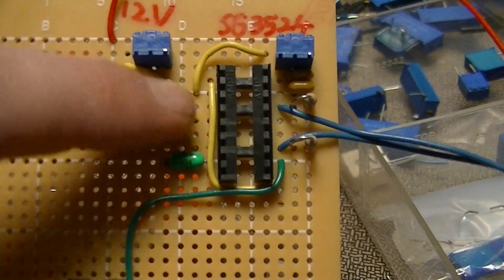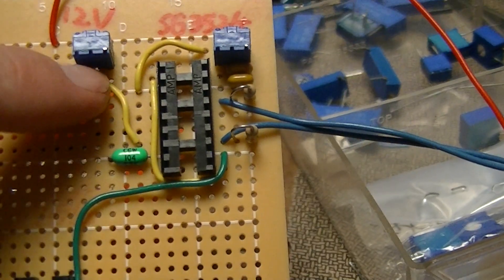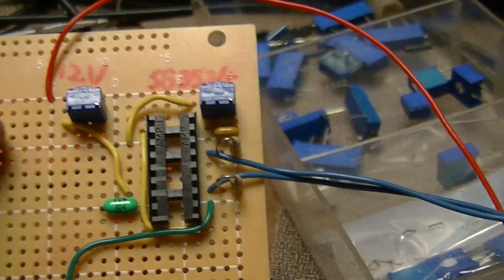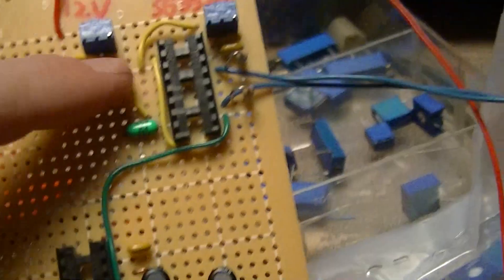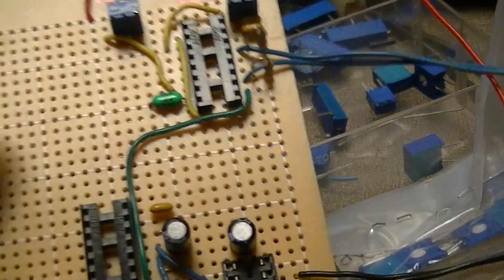That one is mostly done except I need to replace that jumper wire with about 50,000 ohms of resistance, probably a 47,000 ohm resistor just to be on the simple side.